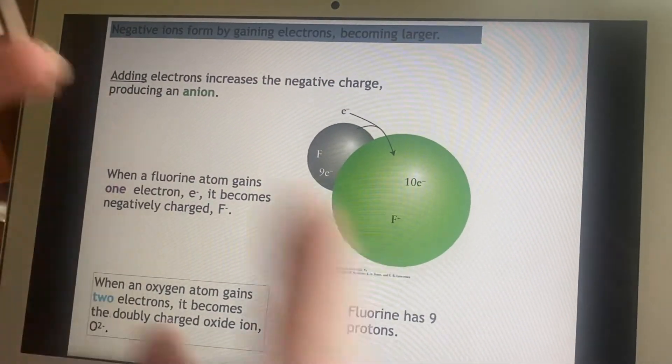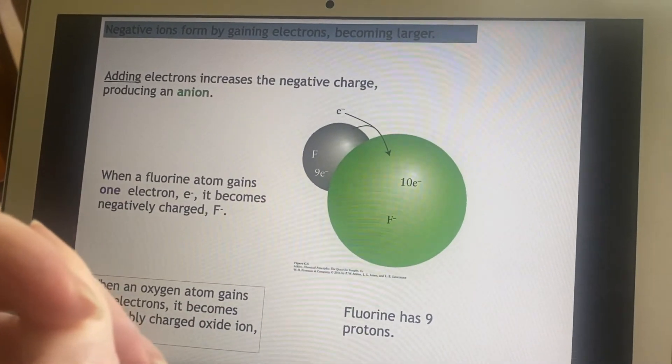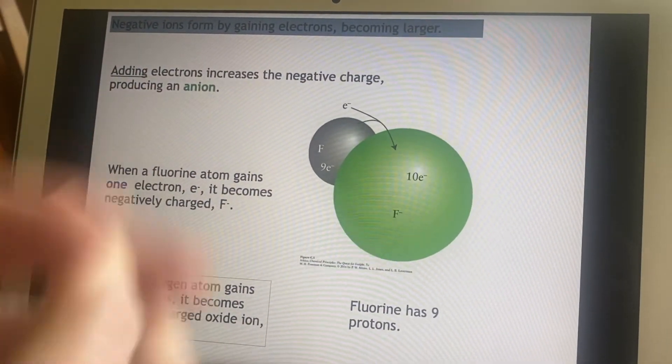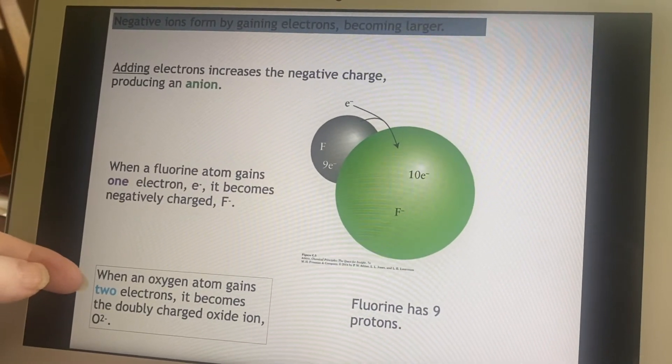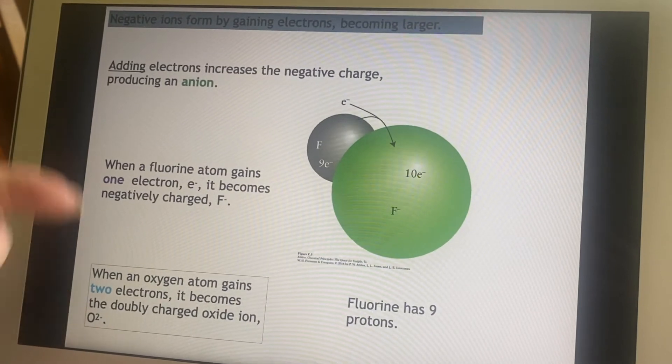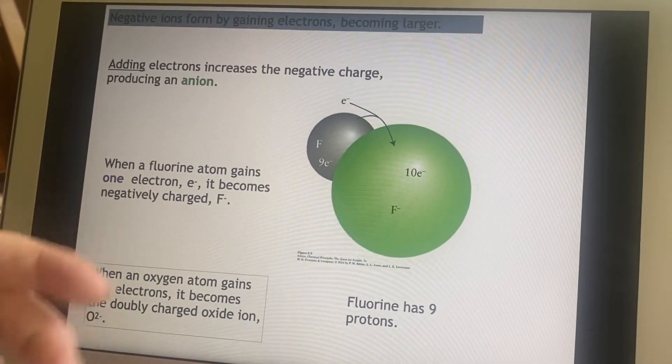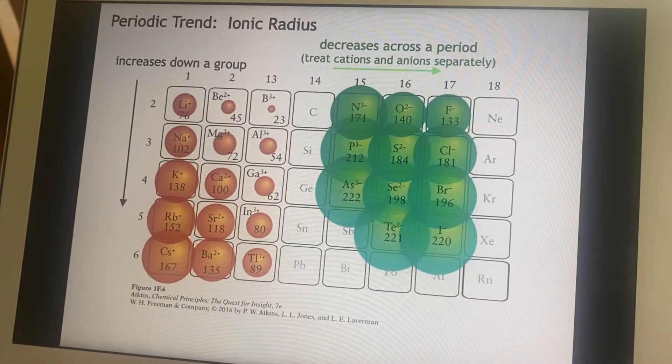So this is an analogy to help you remember that from the previous slide, the cations become smaller than the original atom and the anions become larger than the original atom. Needless to say, if you have something like oxygen which has picked up two electrons, it's going to have two extra electrons compared to the protons and will grow even larger.